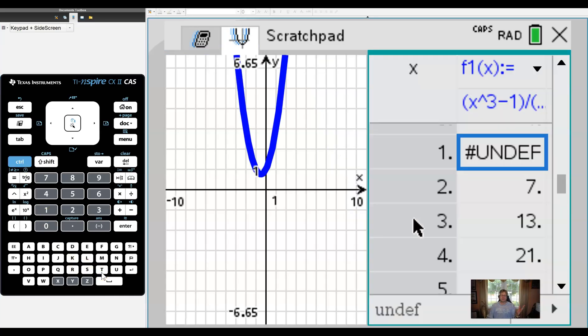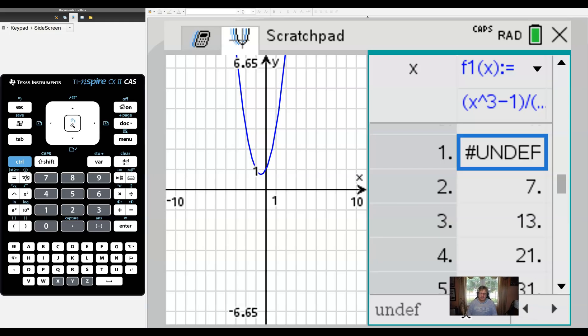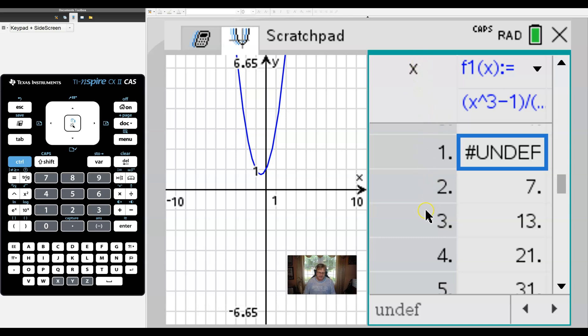What that'll do is divide the screen in half, where the left side is your graph and the right side is a table of values. And you can see you have your X column and you have your F1 of X, which is defined by that function that we entered.